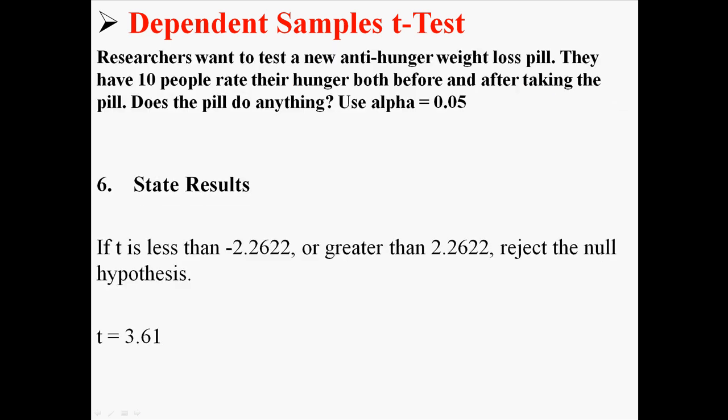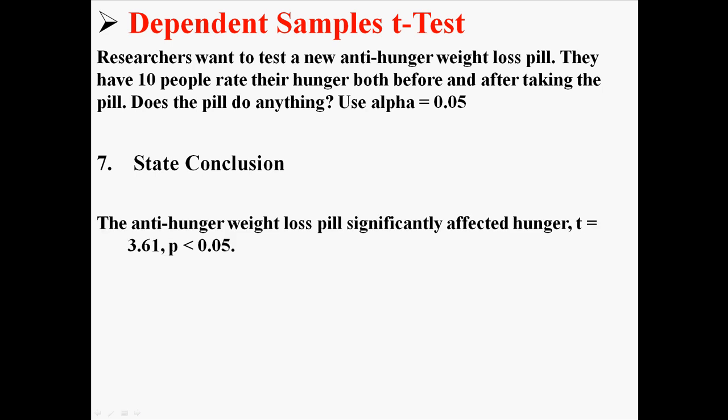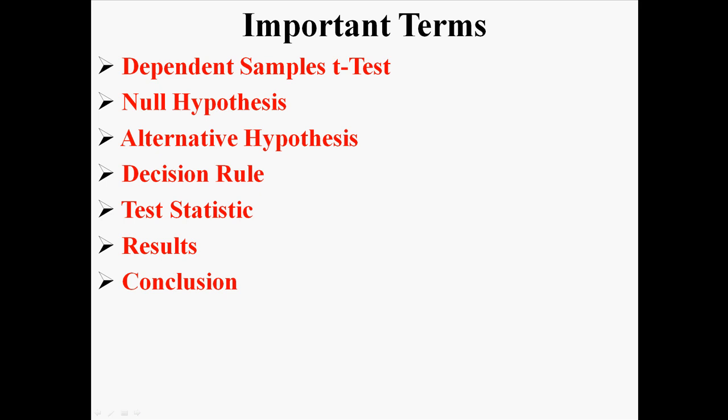Now we can state our results. Our decision rule was to reject the null if t was less than negative 2.26 or greater than positive 2.26. Our t was 3.61, which is definitely greater than 2.26, so we reject the null hypothesis. In conclusion, the anti-hunger weight loss pill significantly affected hunger — written formally as t(9) = 3.61, p < 0.05. There is a significant difference between before and after. That is a dependent samples t-test.